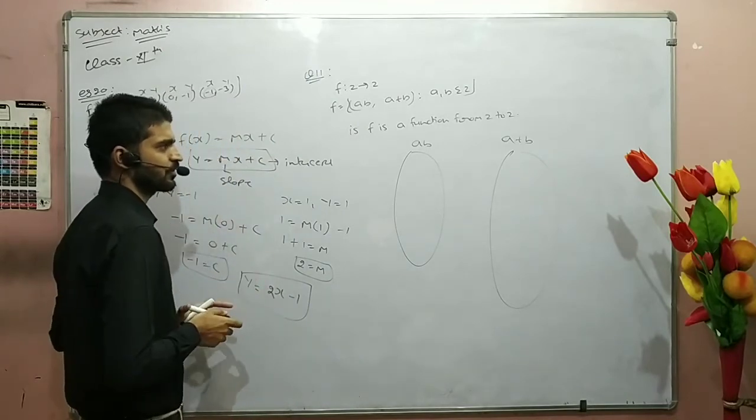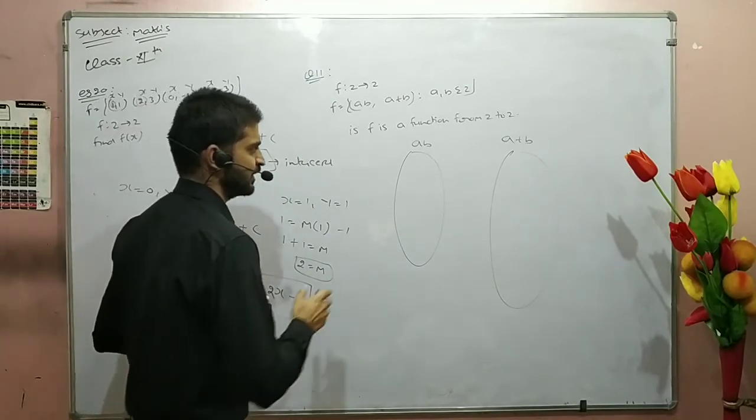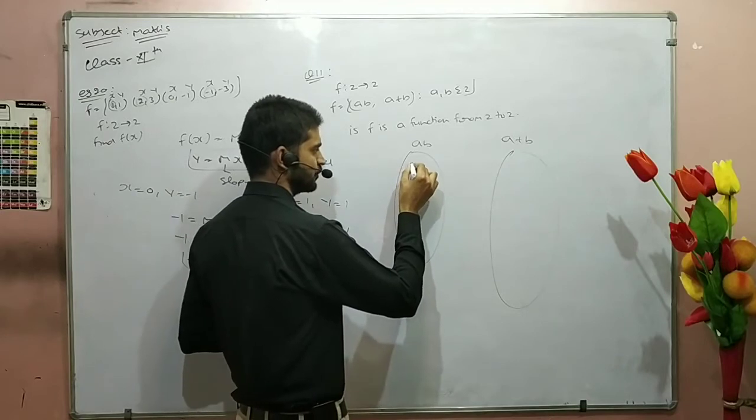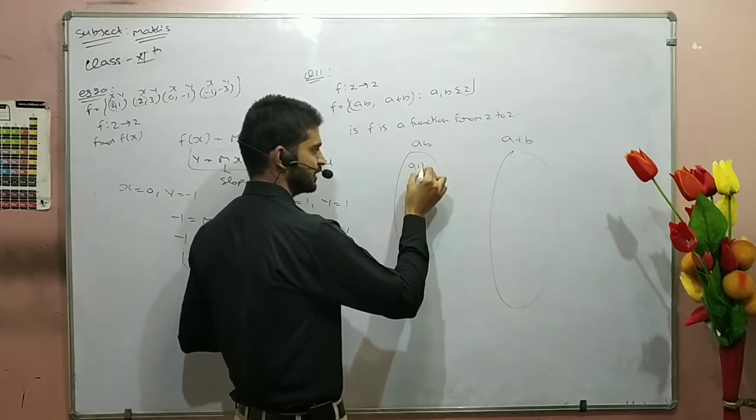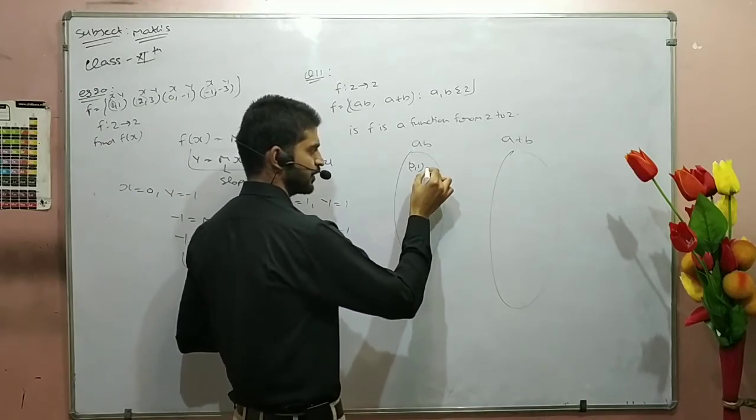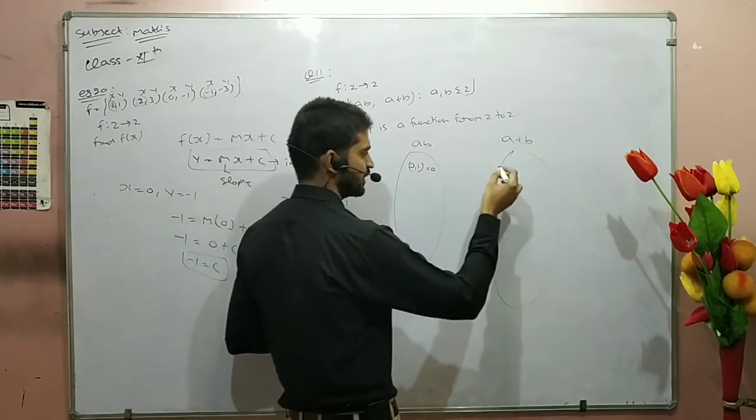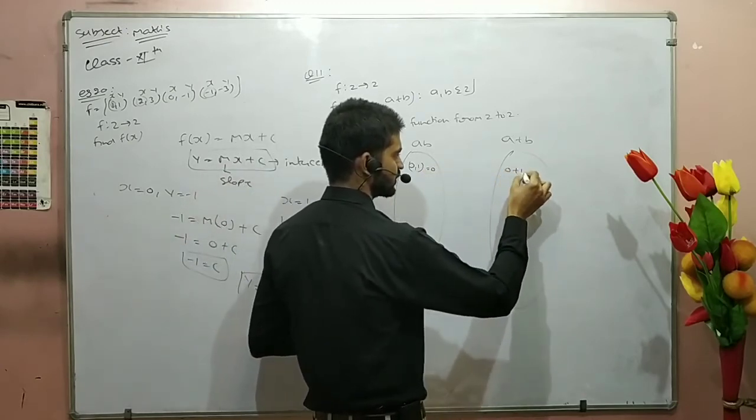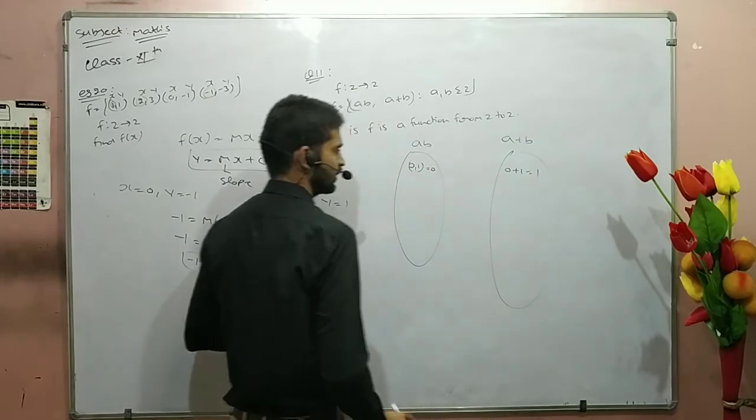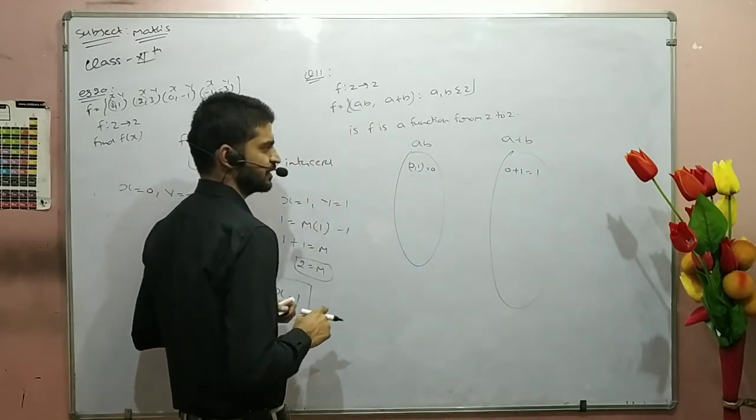Now we have A to B. We have two elements in the product. Here we have A to B as (0, 1). So for 0 to 1, what is the value? If I put 0, then we have 0 plus 1.